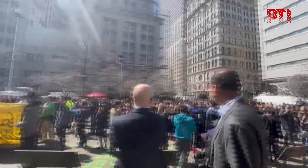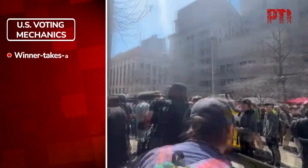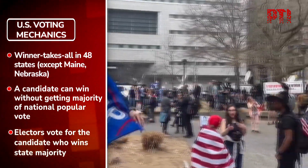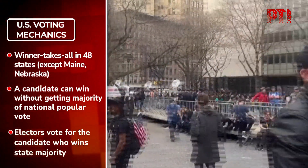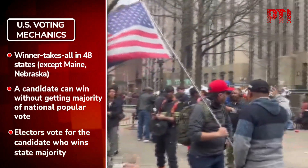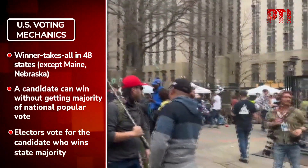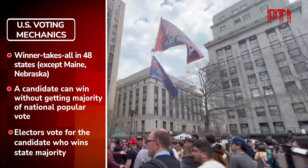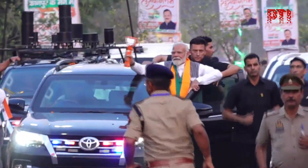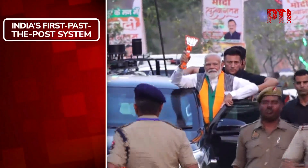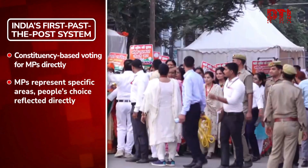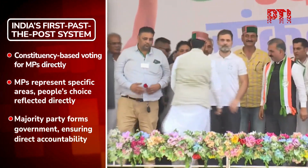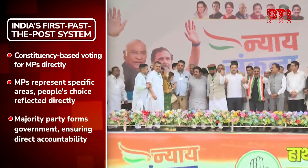In the US, when citizens vote, they are essentially voting for electors pledged to their candidate, not the candidate directly. In most states, the candidate who wins the majority in that state gets all of that state's electoral votes. This means a candidate can win the presidency without winning the national popular vote. Compare this to India's first-past-the-post system, where each constituency elects an MP directly, and the party with the majority of MPs takes control of the government. This way, power directly reflects the people's vote in India.